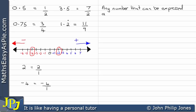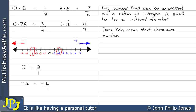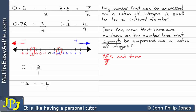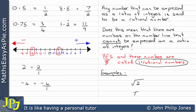Any number that can be expressed as a ratio of integers is said to be a rational number. Does this mean there are numbers on the number line that cannot be expressed as a ratio of integers? Yes, it does. These numbers are called irrational numbers. Examples are the square root of 2 and pi. You will often have heard that pi is 22 over 7, but I want to stress that this is just an approximation — you will not find integers whose ratio gives you exactly pi.